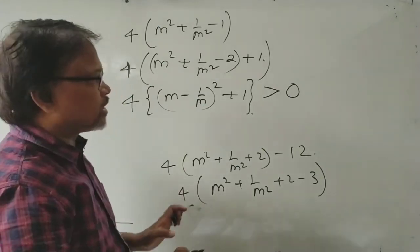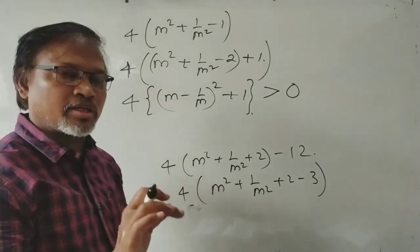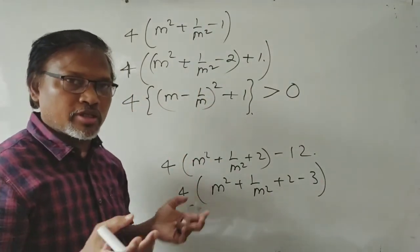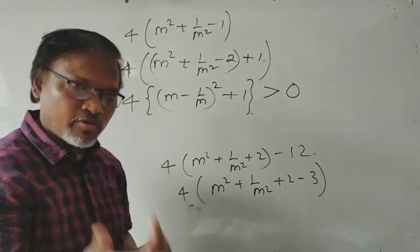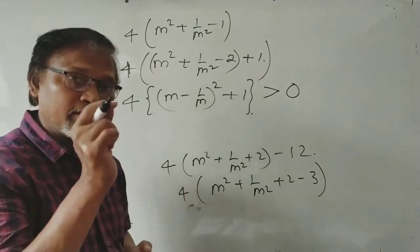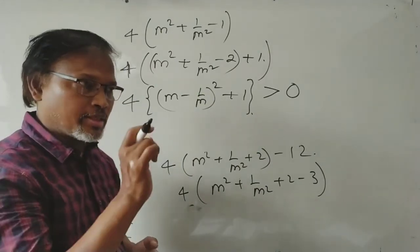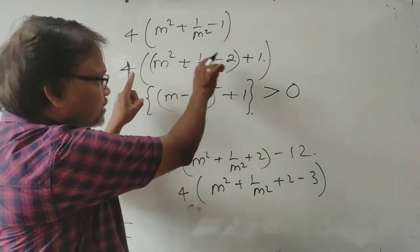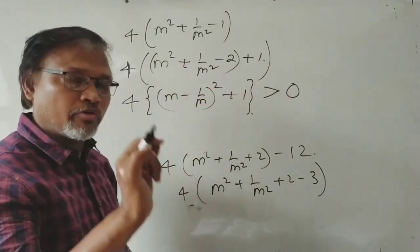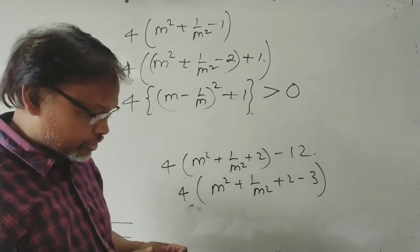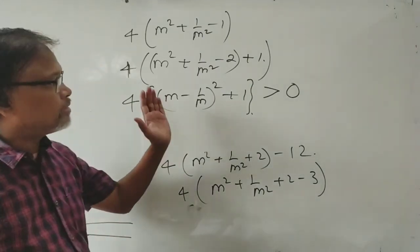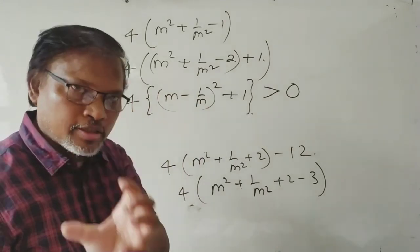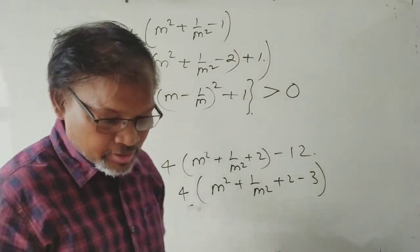Therefore, B² − 4AC is always greater than 0, which means the equation always has real roots. By this method you can show that the discriminant is always positive or always negative in a definite manner. Hence, the equation has only real roots. Thank you.